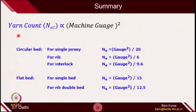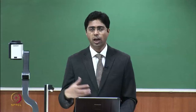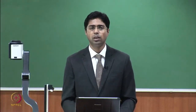Just a quick recap of what we covered in the last lecture. We have seen that the yarn count that can run on the machine is directly proportional to the machine gauge squared. For different types of technologies in circular bed and flat bed, the proportionality constant can be different. For example, in single jersey the proportionality constant is 1/20, and for rib it is 1/6. This proportionality constant is empirical in nature — it comes from the knitter's experience. This useful relationship allows you to check whether a particular yarn is suitable to run on a given machine.